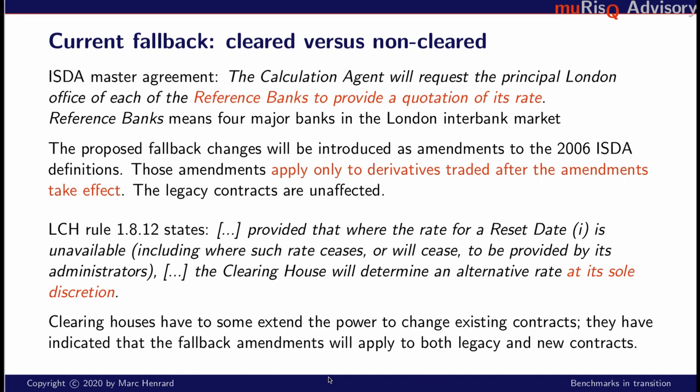Currently, the fallbacks are not extremely good, and there is a proposal to change to a better or more precise fallback. But those amendments will apply only to the new derivatives — derivatives traded after the amendments take effect. The legacy contracts, already traded, will not be affected by this change of definition. On the CCP side, the CCPs have the power to change or decide the rate in case the rate is unavailable. They have already announced that if ISDA changes the fallback mechanism, they will change it in a similar way. But in the case of clearing houses, it will apply to both legacy and new contracts. So the current contract will also be changed if there is a change on the CCP side.